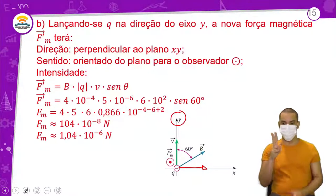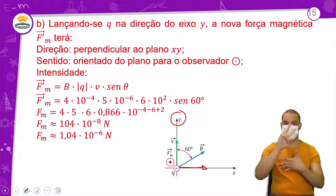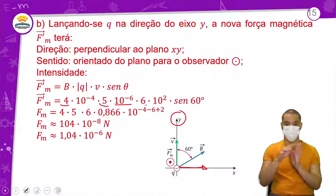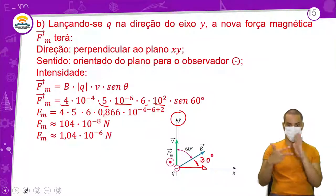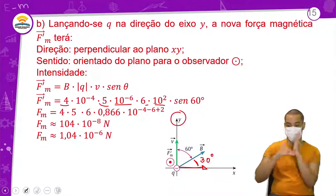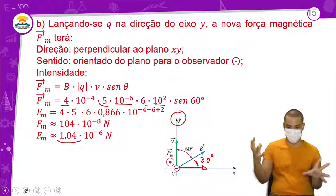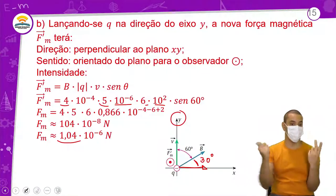A força magnética FM = 4 × 10⁻⁴ × 5 × 10⁻⁶ × 6 × 10² × seno(60°) = 1,04 × 10⁻⁶ N. A única coisa que mudou foi o seno: era seno(30°), agora virou seno(60°), e o valor é diferente. Movimento de uma carga elétrica em um campo magnético uniforme: primeiro caso, θ = 0° ou 180° — paralelo, mesmo sentido ou sentidos opostos. Seno de 0° e seno de 180° são zero, portanto a força magnética é zero.